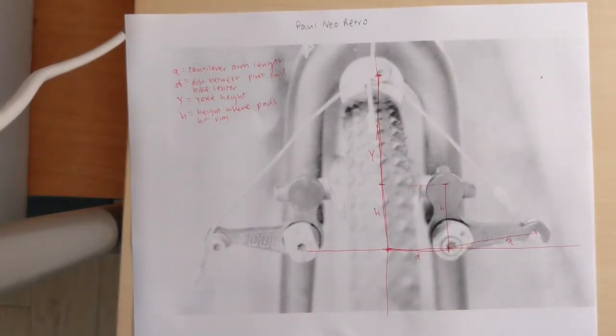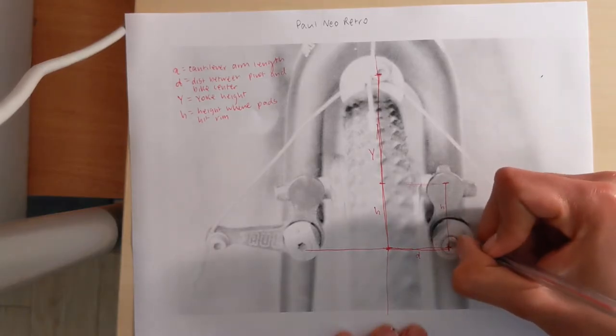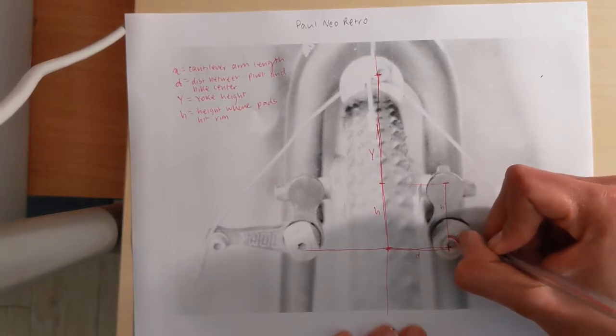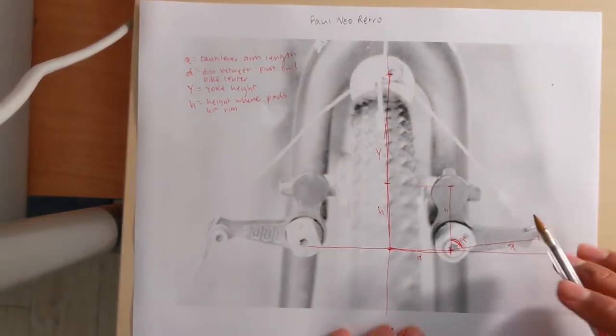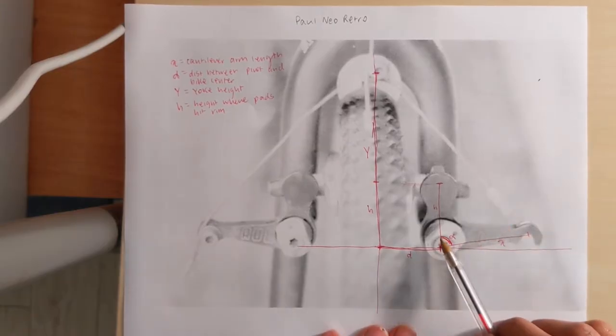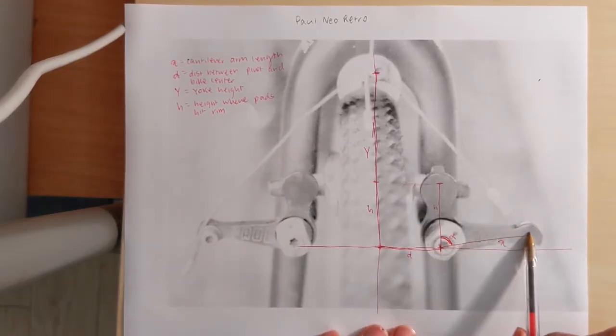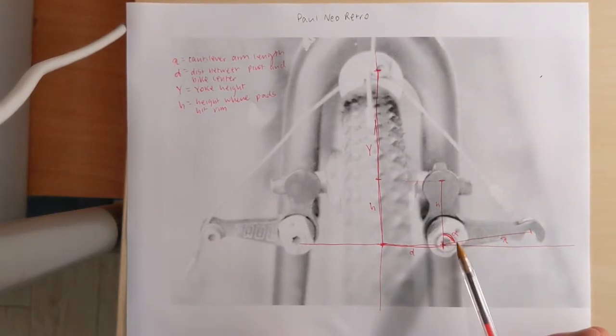Let's get some angles. This is an important angle, alpha. Alpha is the angle between the vertical and the cantilever arm. If alpha is high, this is a wide profile cantilever.